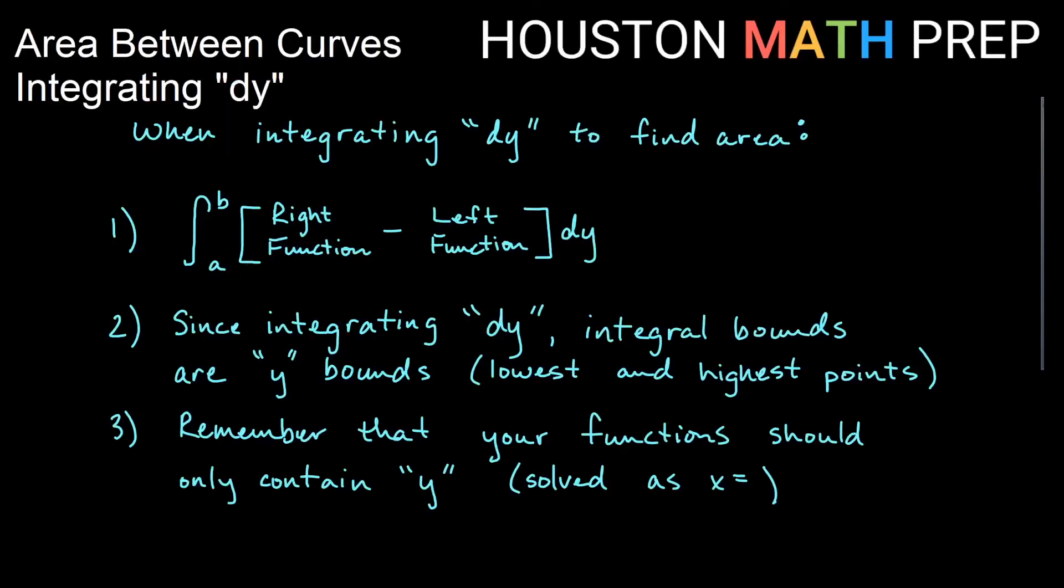In summary, when you're integrating dy to find area between curves, remember instead of top minus bottom, it's going to be right function minus the left function. When you're integrating dy, remember these are y bounds. So you need to find y values for those, not x values. If it's y values, then a is going to be the lowest point in the region, and b is going to be the highest point in the region. And remember your functions have to be in terms of y. So you got to have some y stuff here, and you got to have some y stuff here. If you have some x's in here, that's not really what we want to do at this point in calculus. But while we're learning to do it here, we need everything in terms of y for integrating dy. Good luck looking at dy integrals. Check out our next video where it discusses how to decide whether to integrate something dx or dy.